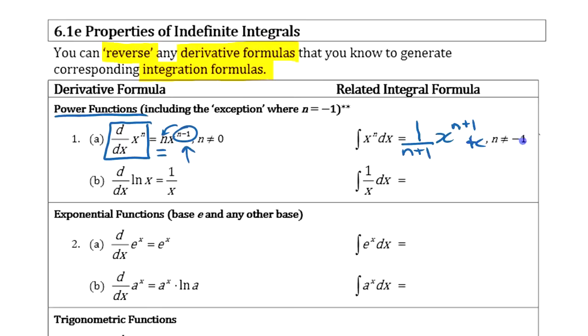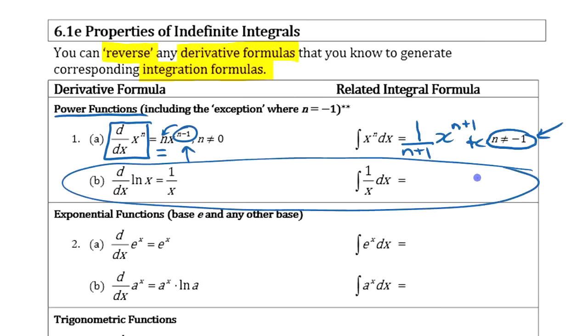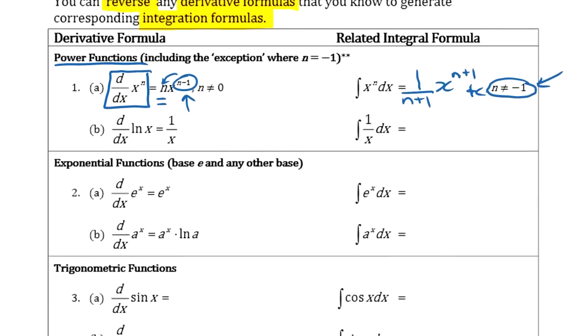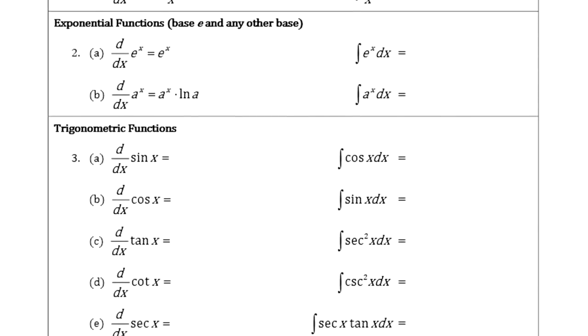Now, we're going to come back in a second to this idea of why this can't be negative 1 there, okay? And it has to do with this. We're going to leave that for a second. We're going to turn to some other ones that are hopefully pretty straightforward here.